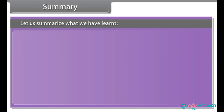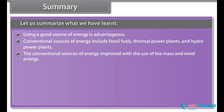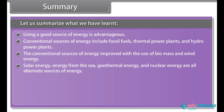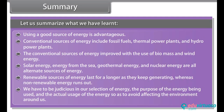Summary. Let us summarize what we have learnt. Using a good source of energy is advantageous. Conventional sources of energy include fossil fuels, thermal power plants, and hydropower plants. The conventional sources of energy are supplemented by biomass and wind energy. Solar energy, energy from the sea, geothermal energy, and nuclear energy are all alternate sources of energy. Renewable sources of energy last for as long as they keep generating, whereas non-renewable energy runs out. We have to be judicious in our selection of energy, its purpose, and actual usage, so as to avoid affecting the environment around us.